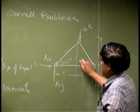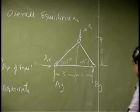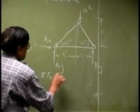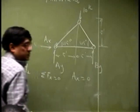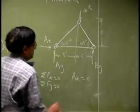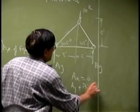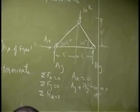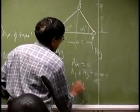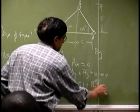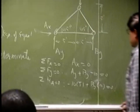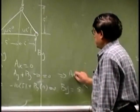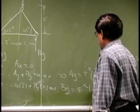This gives angles of 45 degrees on both sides. Summing forces in X gives AX equals zero. Summing forces in Y gives AY plus BY minus 10 equals zero. Taking moments about point A, we get negative 10 times 5 plus BY times 10 equals zero, which gives BY equals 5 kips. Substituting back gives AY equals 5 kips, both acting upward.